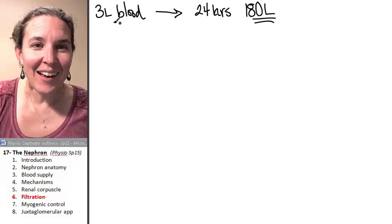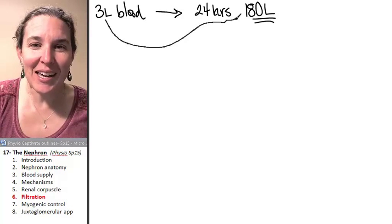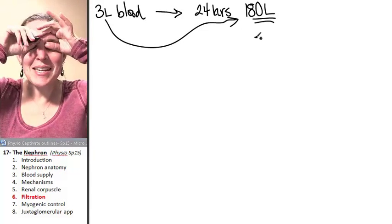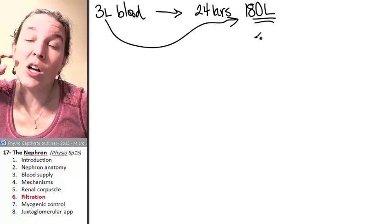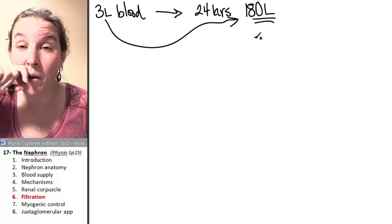What? You have got to be kidding me. That means that you filter out 60 times your entire blood volume in one 24-hour period.